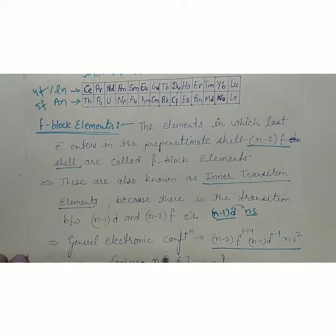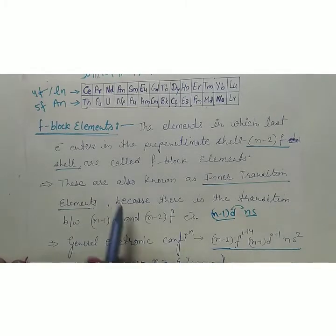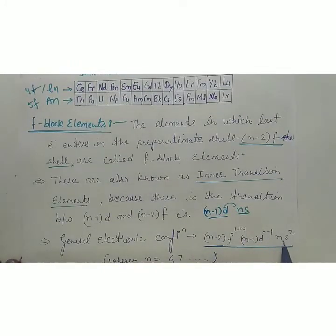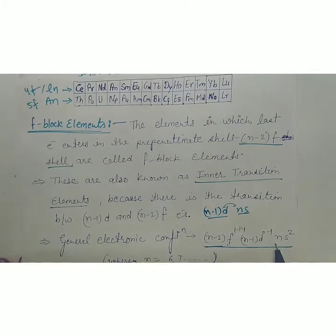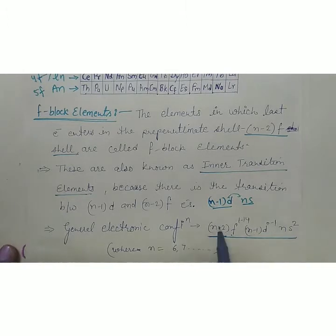The general electronic configuration of F block elements is (n-2)F¹⁻¹⁴, (n-1)D⁰⁻¹, nS². As you know, 14 electrons can be filled in F subshells, and 1 electron is already filled in lanthanum or actinium in D, and the outermost S electrons are filled. Where N equals 6, when N is equal to 6 then the first F orbital will be 4F.